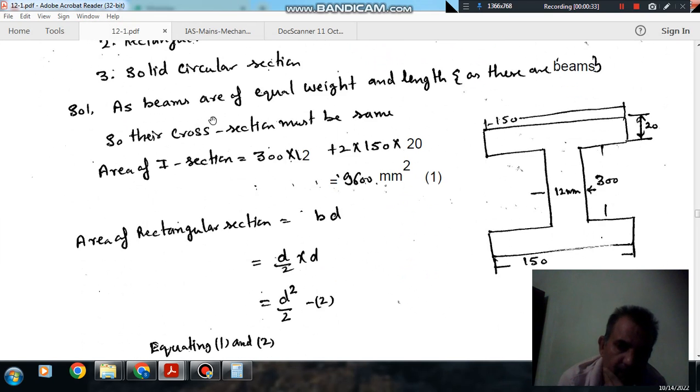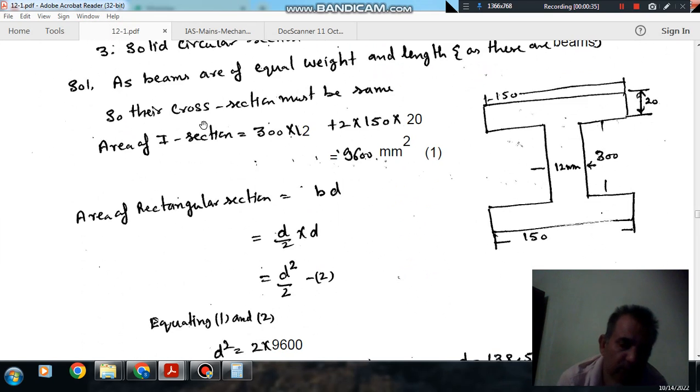So here we are assuming that the beams are of same material and their length is same. And it is given that their weight is same, so it means their cross-sectional area is the same. So suppose in your first section, that is I-section.